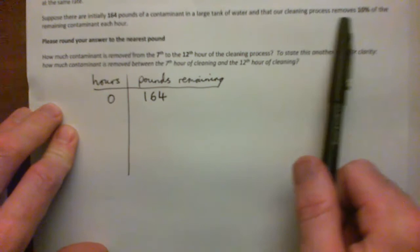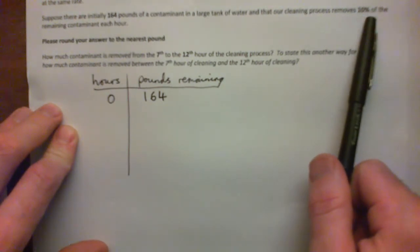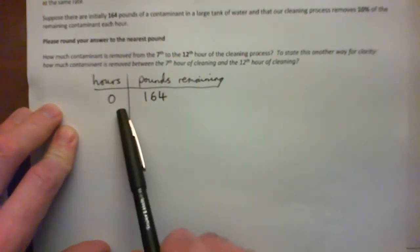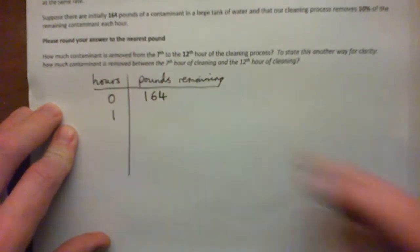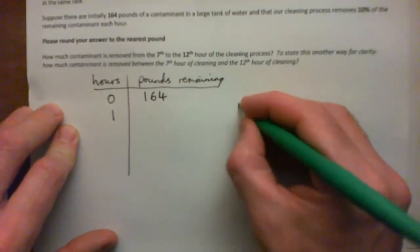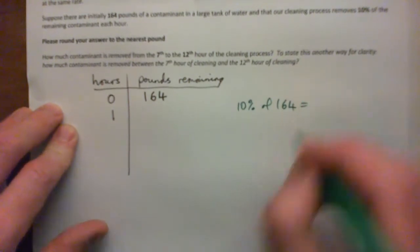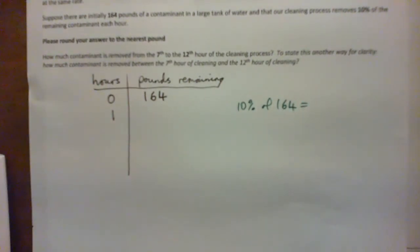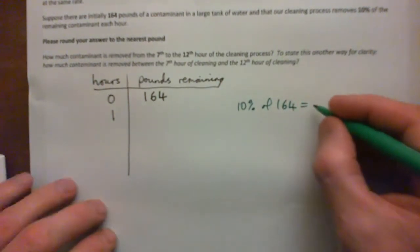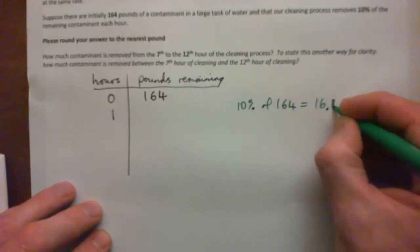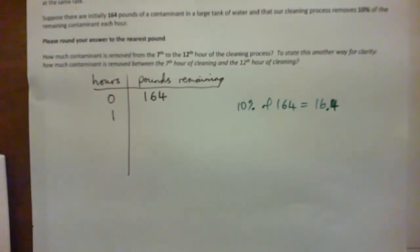And the cleaning process removes 10% of the remaining contaminant each hour. So after the first hour, we can get 10% of 164. And what's that off the top of your head? 10% is 16.4. Move the decimal point over one. It's one-tenth of that, dividing by 10.